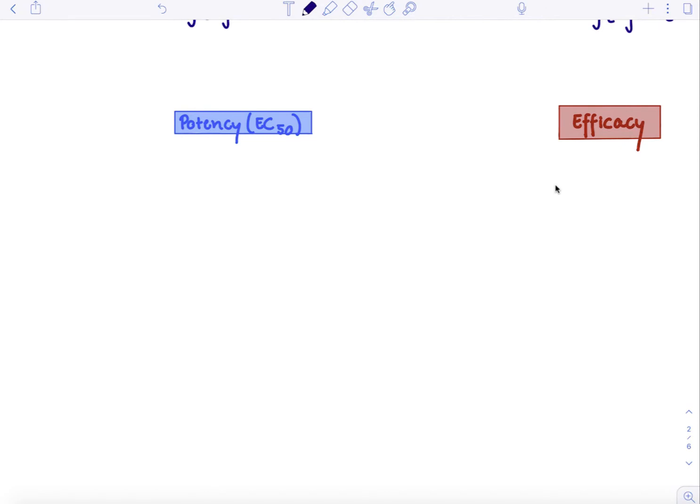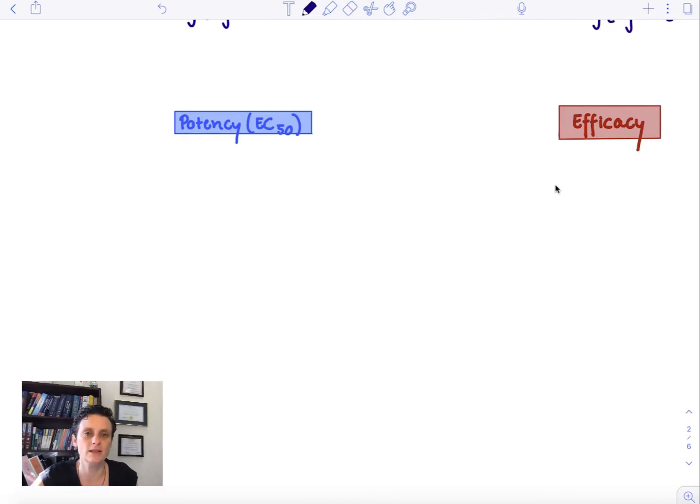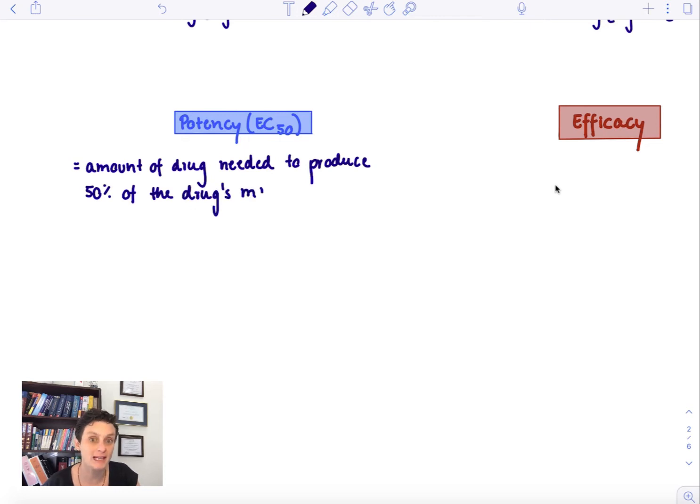In this video, I want to explain the pharmacologic terms potency and efficacy of drugs. Let's start with potency. Potency is the amount of drug that we need to produce 50% of the drug's maximal effect.